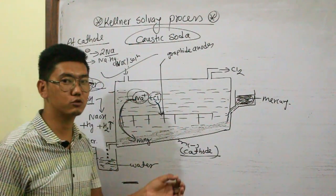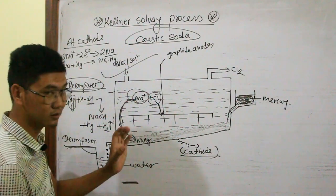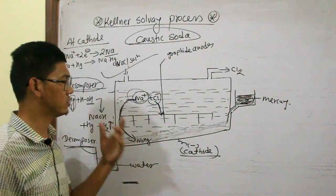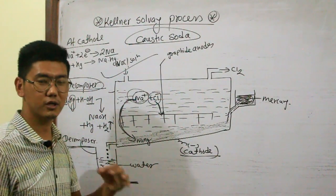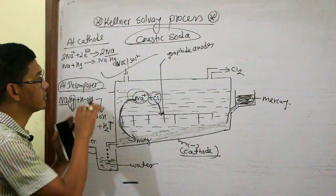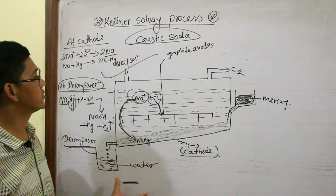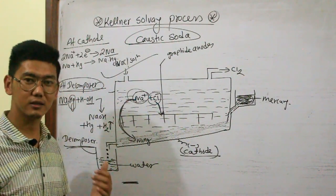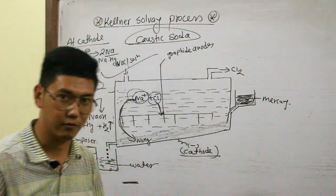In the exam, you can point out the manufacture of NaOH by the Castner-Kellner process. You can describe the manufacture of caustic soda. The Castner-Kellner process is not a modified form. If you have questions about the Castner-Kellner process, please feel free. Please like, subscribe and comment. Thank you.